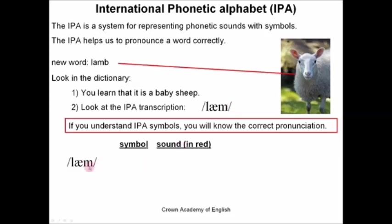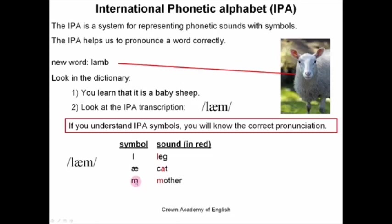So the IPA symbols — here are three IPA symbols. The first one is the symbol for the sound L, like leg. The second symbol is A, like cat. And the third symbol is the symbol for M, like mother. So if we know these symbols, we now know how to pronounce this word. We pronounce it: lamb. Lamb.